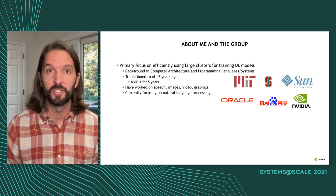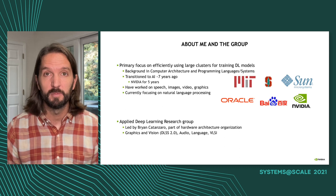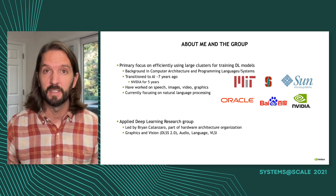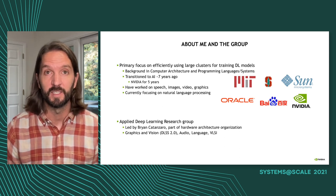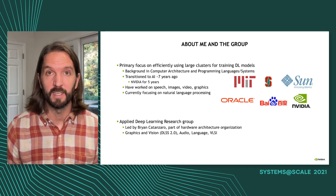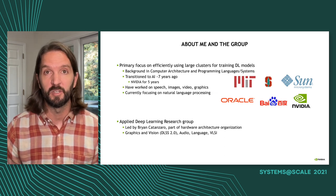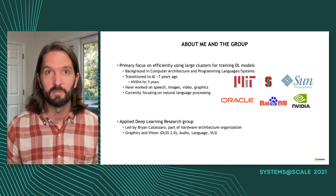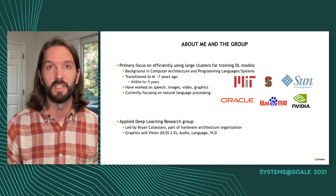A little bit about me before we get started. My primary focus is on scaling up machine learning models and training them on large clusters, and all the systems issues that arise when we try to do that. My background is in computer architecture, programming languages, and system design. I transitioned to AI about seven years ago when I joined Baidu, then joined NVIDIA about five years ago, working on systems for AI. We're at the Applied Deep Learning Research Group — we work on DLSS, VLSI, different vision tasks, and natural language processing.